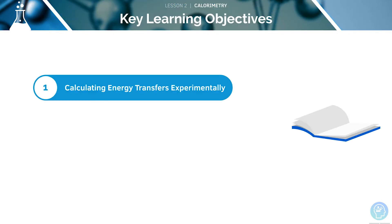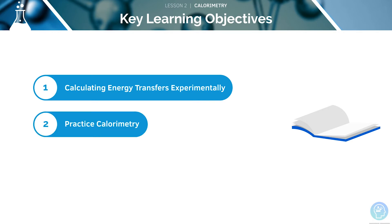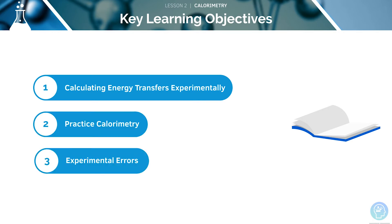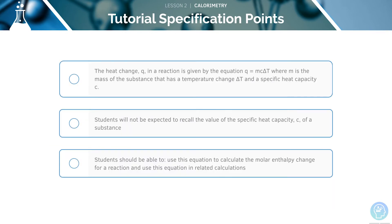Here are the key learning objectives for this session. First, we will look at calculating energy transfers experimentally, then practice calorimetry, and finally look at experimental errors. Here are the AQA specification points for this section — feel free to pause the video now and read through them before we begin. The first specification point is to look at an equation for calorimetry.